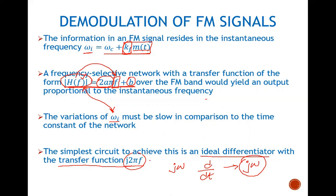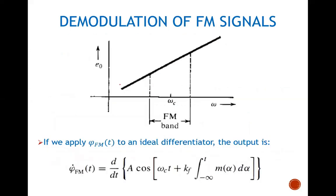So if we have a transfer function like this, we can use it to demodulate an FM signal. This plot shows the y-axis — the output amplitude variations — dependent upon the frequency variation. With the change in frequency, the amplitude output changes linearly; this relationship must be linear. If there is any non-linearity, the variations in the output amplitude will not be exactly proportional to the input frequency, and there would be some distortion in the demodulated signal.